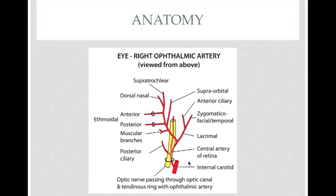This is just a figure that shows the internal carotid artery. As you can see, there's a branch of the ophthalmic artery coming out, which further divides down. That branch right there is the central retinal artery.